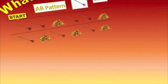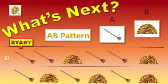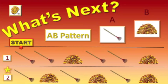This AB Pattern is a rake and a pile of leaves. Is row one or row two the correct AB Pattern? The answer is two.